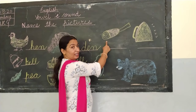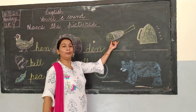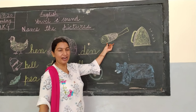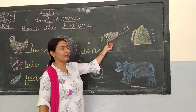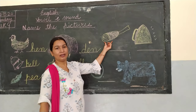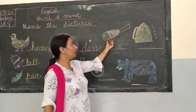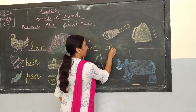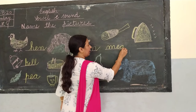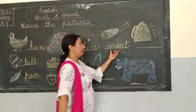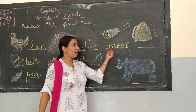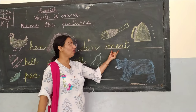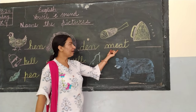Now this is the picture of meat. Animals like dog, cat, and lion like to eat meat. Meat means mass. The spelling of meat is M-E-A-T, meat. M-E-A-T, understand?